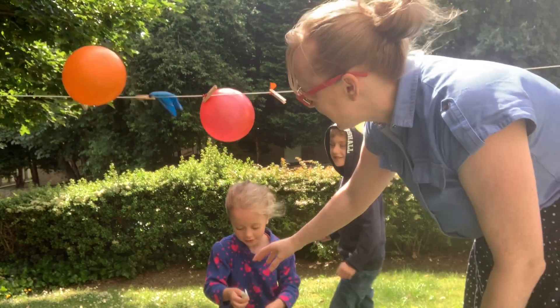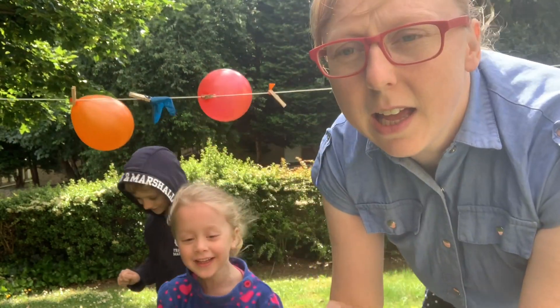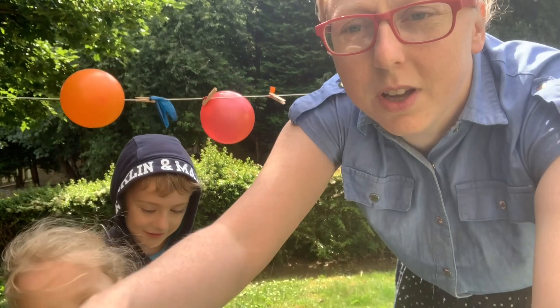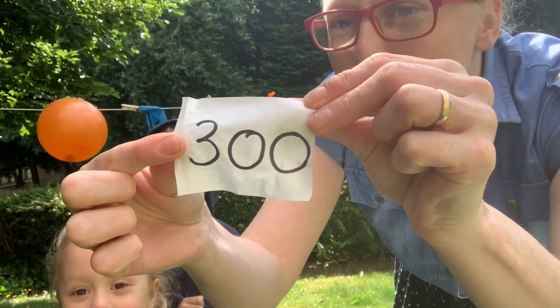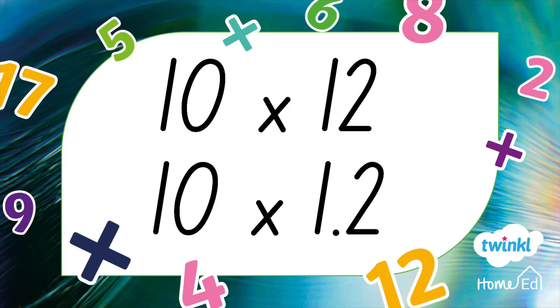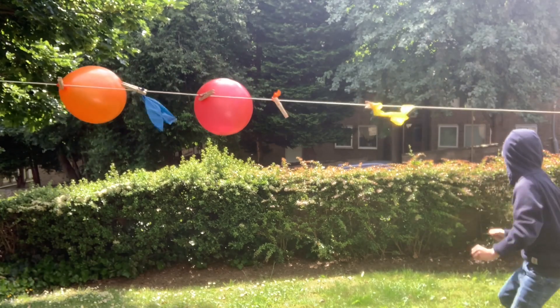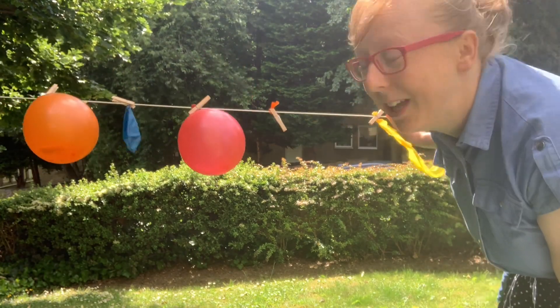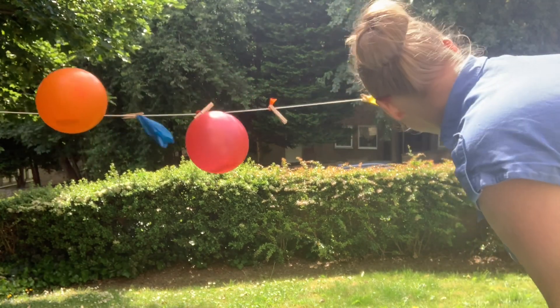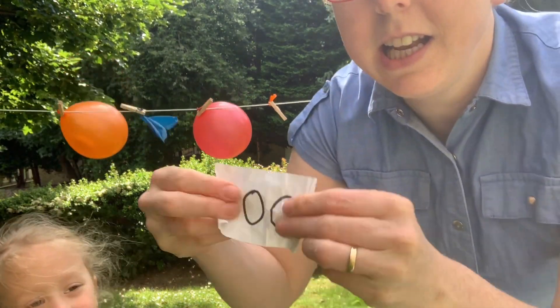Scores so far: Ezra has 100 points, Amelia has 300 points. Next question, a bit trickier — what is 10 times 12? The answer is 120, or 12.0 if you were doing the decimals. Ezra's team pops a balloon — it's 100 points. Can he beat 300?